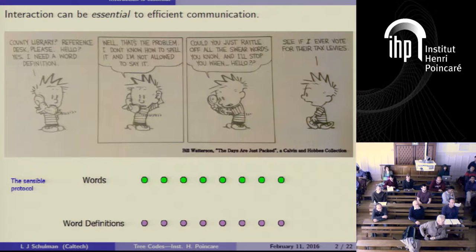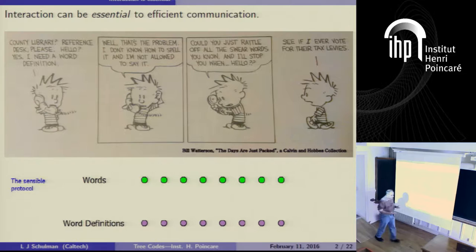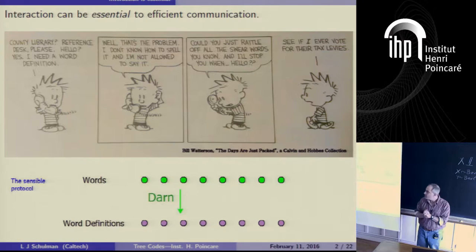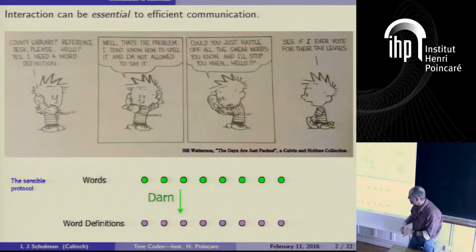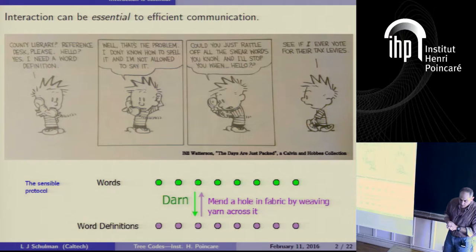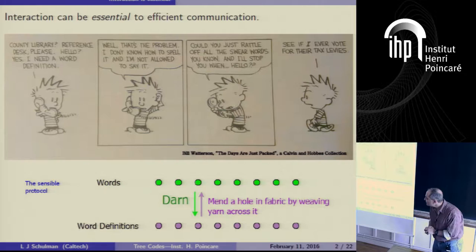Here's the sensible protocol that Calvin would have liked to perform. There's a series of vertices called words, and another series of vertices with their definitions attached. The sensible protocol for looking up the spelling of some word is: you say the curse word you'd like — say 'darn' — and the librarian responds with its definition, which is 'to mend a hole in fabric by weaving a yarn across it.' At which point Calvin gets frustrated — 'No, that's not what I meant.'